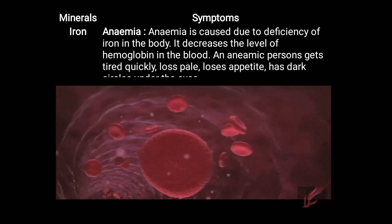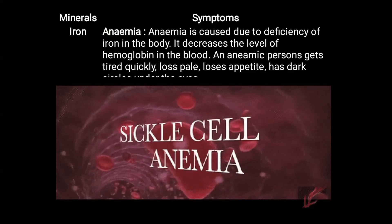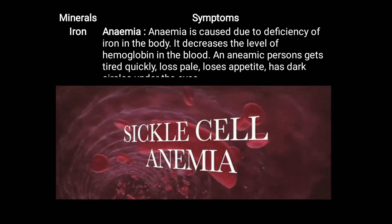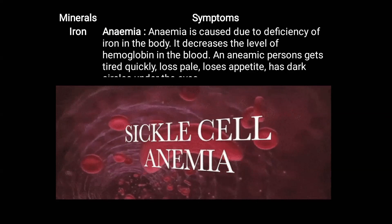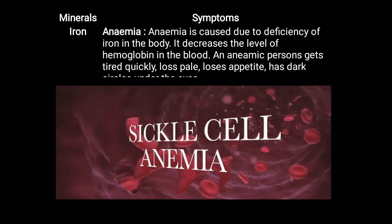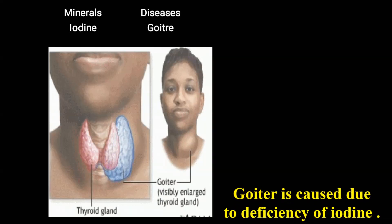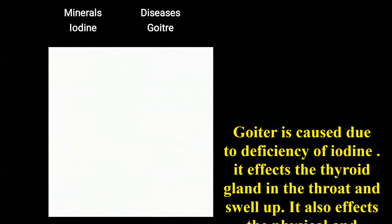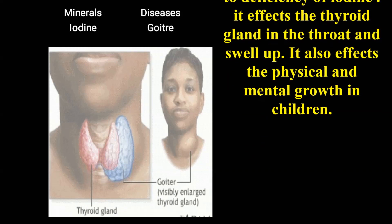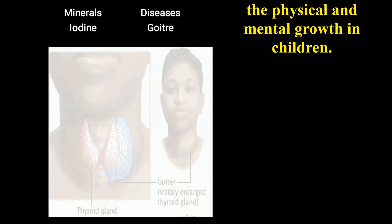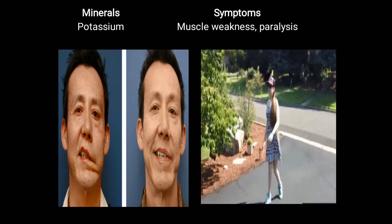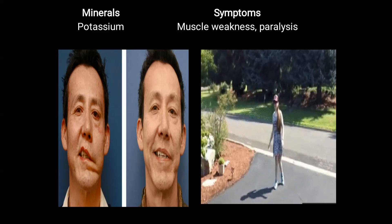Anemia is caused due to the deficiency of iron in the body. It decreases the level of hemoglobin in the blood. An anemic person gets tired quickly, loses appetite, and has dark circles under the eyes. Goiter is caused due to the deficiency of iodine. It affects the thyroid gland in the throat, causing it to swell up, and also affects the physical and mental growth of children. Deficiency of potassium leads to muscle weakness and paralysis.